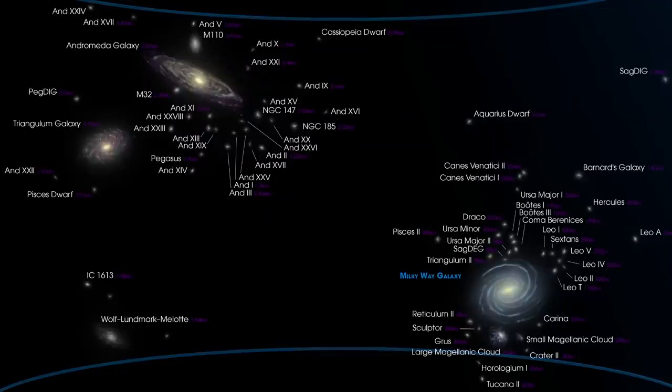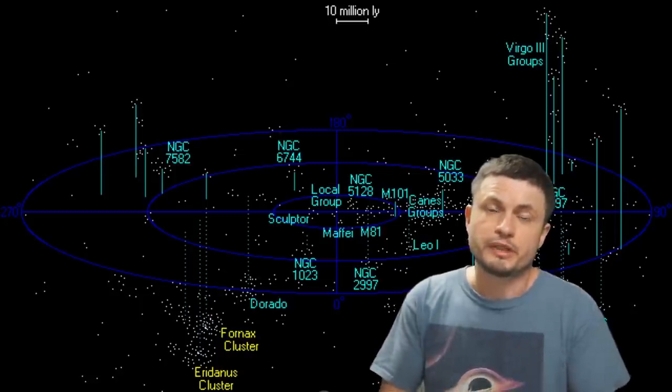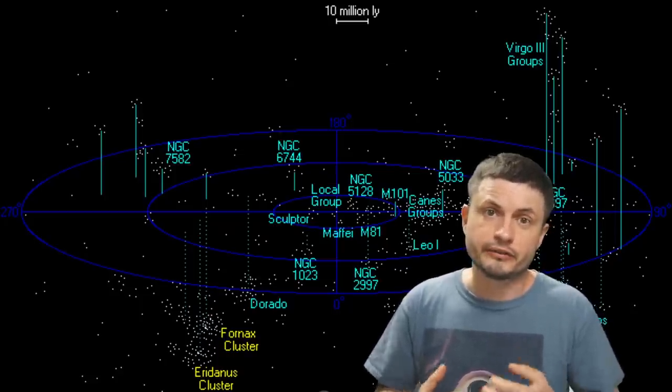And here's an image that shows us some of the smaller neighbors around the Milky Way, the Andromeda and the Triangulum, with some of them only recently discovered. But as we start zooming out of this and start looking at other clusters,